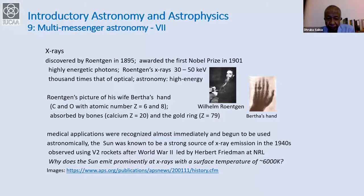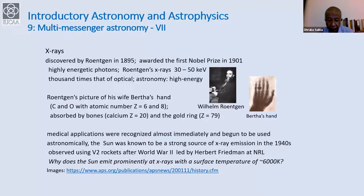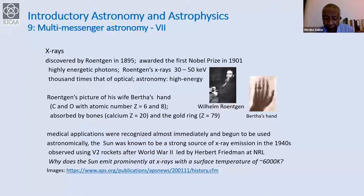Astronomically, the sun was known to be a strong source of X-ray emission in the 1940s, observed using V2 rockets after World War II, led by Herbert Friedman at the Naval Research Laboratory. Now, why do you think the sun emits prominently at X-rays, when its surface temperature is close to about 6,000 degrees Kelvin? If you apply Wien's displacement law, it should peak at the optical region of the spectrum.